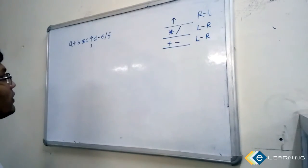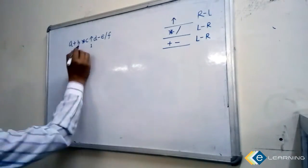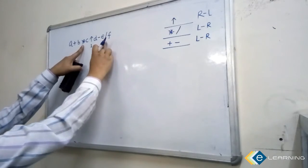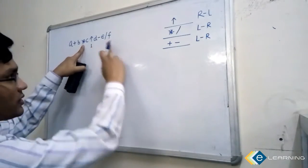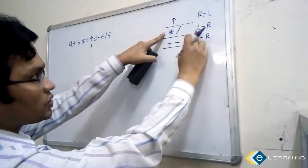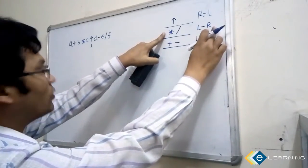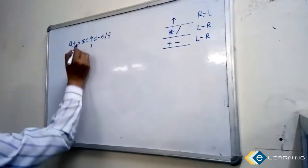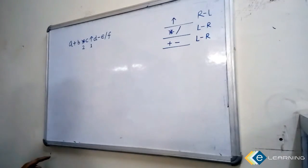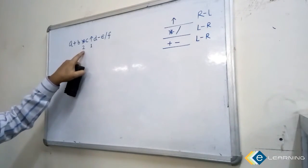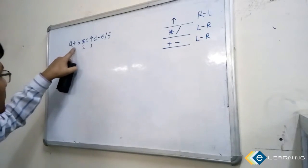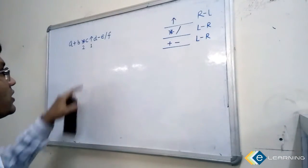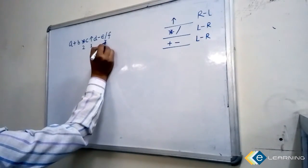Which operator will evaluate second? Star and divide have the same precedence. When two or more operators have the same precedence, associativity tells you which to take first — that means go left to right. Going left to right, star is coming first, so this operator will evaluate second. Make it number two. After that, the remaining operators include divide, so make it number three.